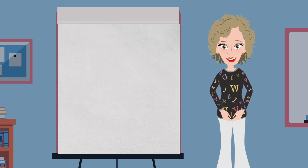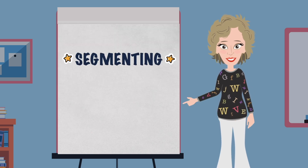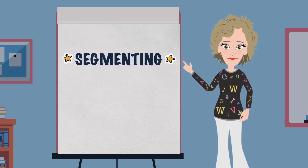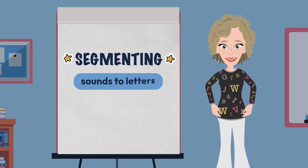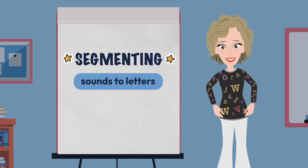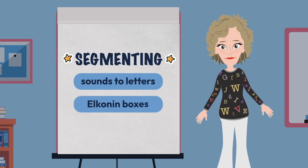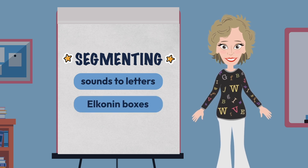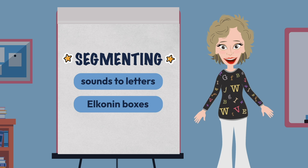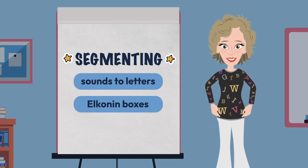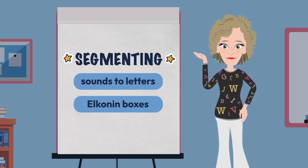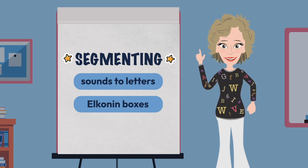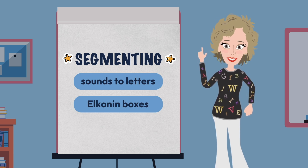The second big power skill of phonics is segmenting, which is the opposite of blending. Instead of putting sounds together to form a word, we now pull the sounds we hear in words apart and assign letters to them. Elkonen boxes, or sound boxes, are a wonderful way to help students hold on to the individual sounds they hear in words, especially in the early stages of teaching segmentation.